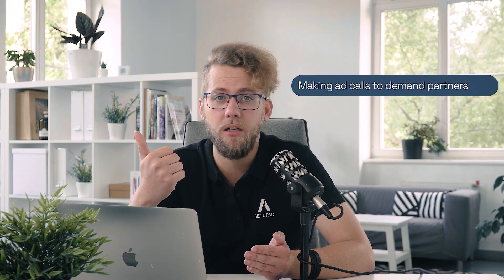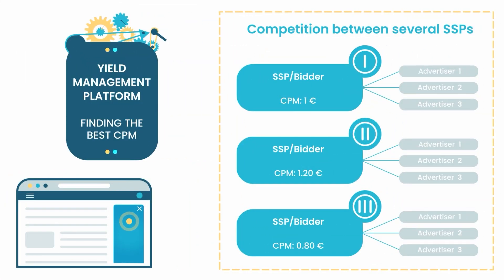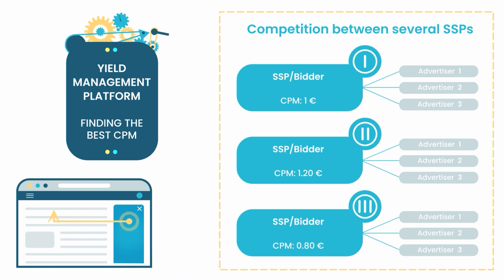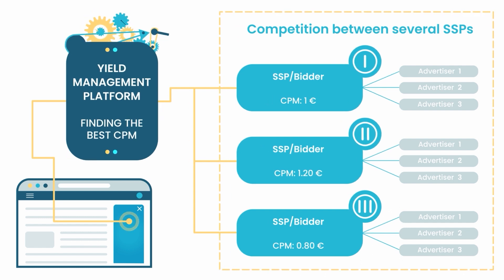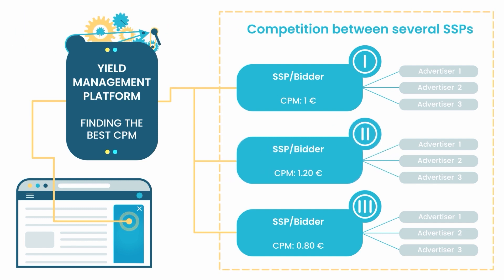How does header bidding work? A header bidding technology sits on top of a header bidding wrapper, which is a JavaScript tag responsible for making ad calls to demand partners, evaluating bids, and communicating with the ad server. Now, let's see how a header bidding wrapper works. Firstly, publishers need to paste the header bidding code in the header of the page. Then, as soon as the user visits the site, the wrapper makes an ad call to all demand partners. Now it's time for demand partners to submit their bids. There is usually a time frame or a timeout in which bidders must respond to prevent page latency. Then the wrapper sends the bids to the publisher's ad server, for example Google Ad Manager. And finally, the highest bidder wins the real-time auction, and his ad creative gets displayed on the publisher's page.